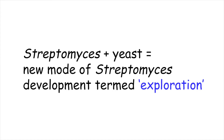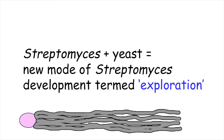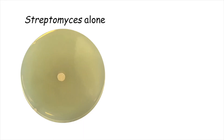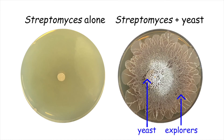Stephanie Jones, a PhD candidate in Marie Elliott's lab at McMaster University, discovered that when you grow Streptomyces next to yeast, they opt for an entirely different mode of growth, termed exploration, that involves the cells moving and spreading away from the yeast. When Streptomyces venezuelae is inoculated by itself on a plate containing glucose, it grows vegetatively. But when it is inoculated next to yeast, you can see that the outcome is starkly different — the colony has initiated exploration and now covers the entire plate.